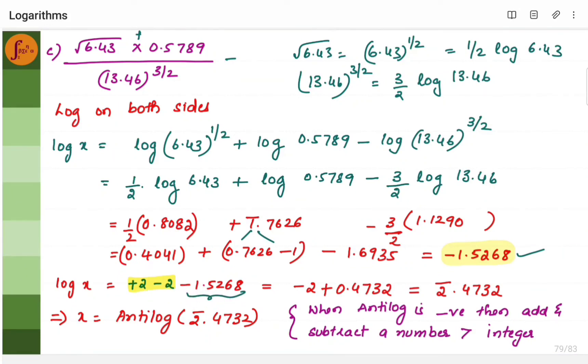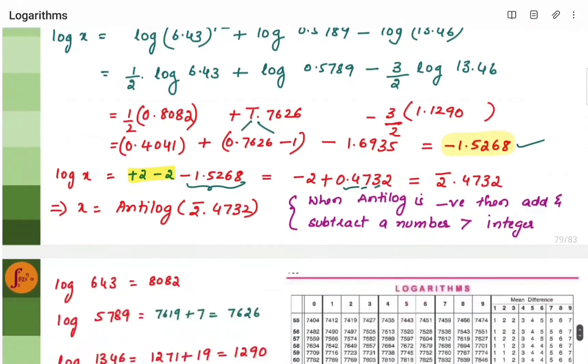So you take plus 2, subtract with this number. 2 minus this and minus 2. 2 minus 1.5 will give you 0.47. And then you have this minus 2. So this minus 2 will become the characteristic. Minus 2 is characteristic and 4732 is the mantissa.